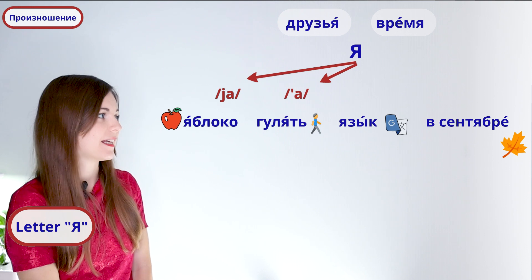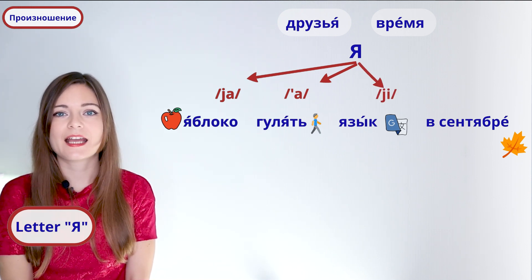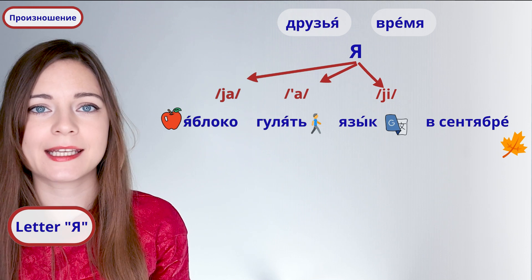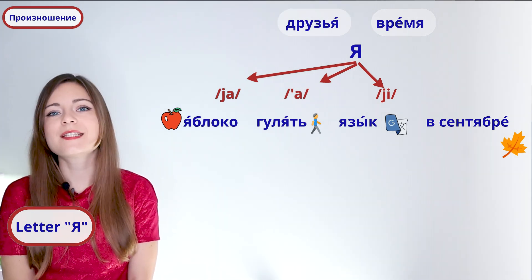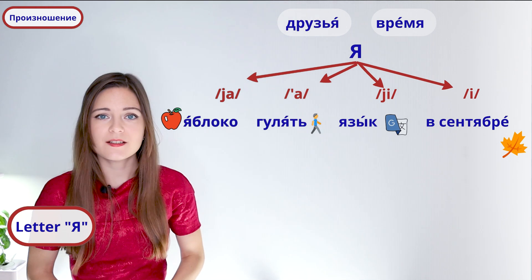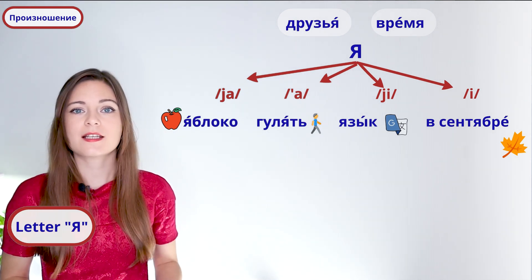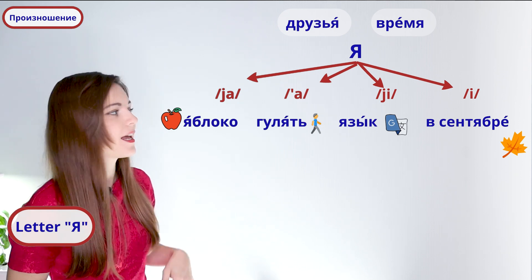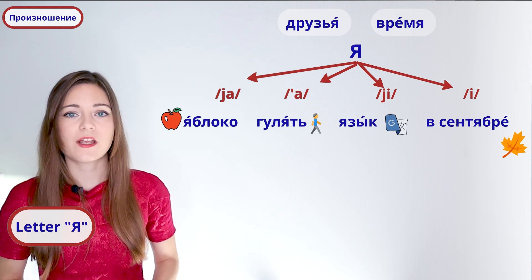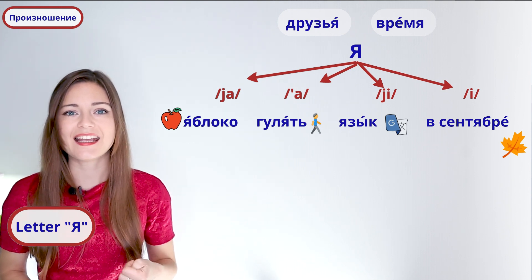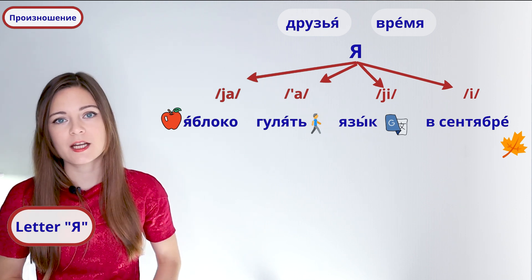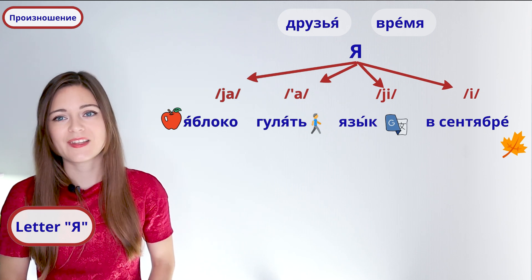In the third word язык, we're going to say й and then и — язык. The beginning sounds a little bit similar to the English word 'yield' — язык. And in the last word в сентябре, we actually pronounce я as an и — в сентябре. What does it depend on? On the position of the letter in the word. We have the two strong variants, яблоко and гулять, when я is stressed. We have the weak versions when я is unstressed. Й язык — it's at the beginning of the word, so we add this little й. And when я is unstressed and in the middle of the word, it's pronounced just as и — в сентябре.